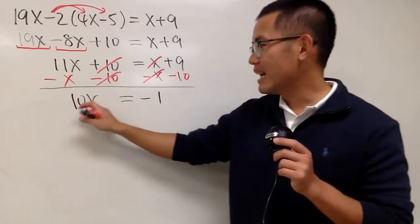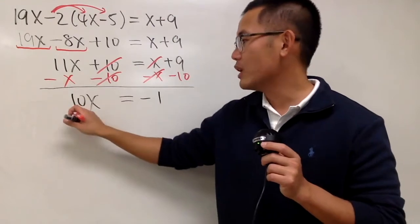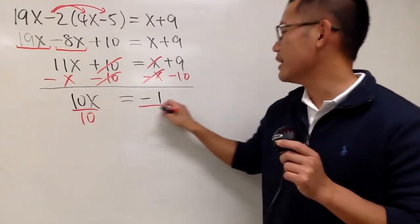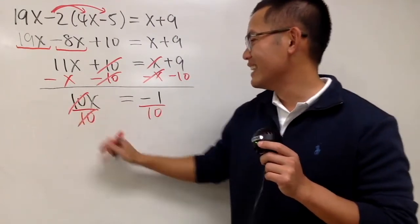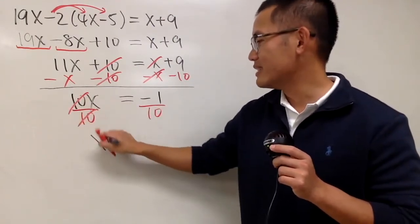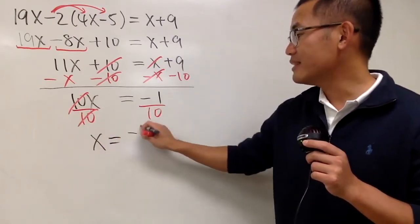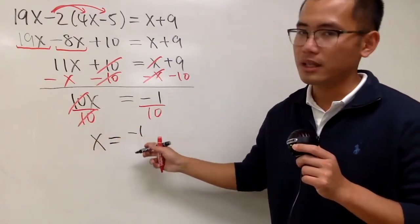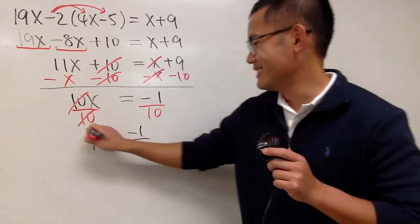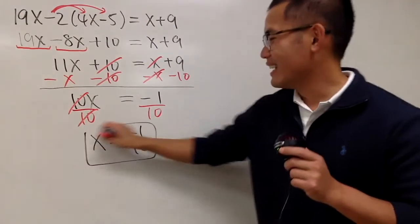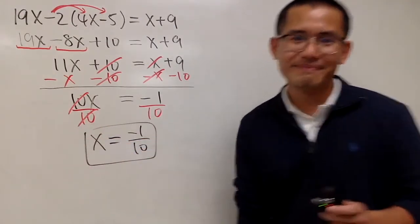Finally, we have 10 times x. To get rid of the 10, we divide by 10 on both sides. The answer is x equals negative 1 over 10. So x is equal to negative 1 over 10. That's it.